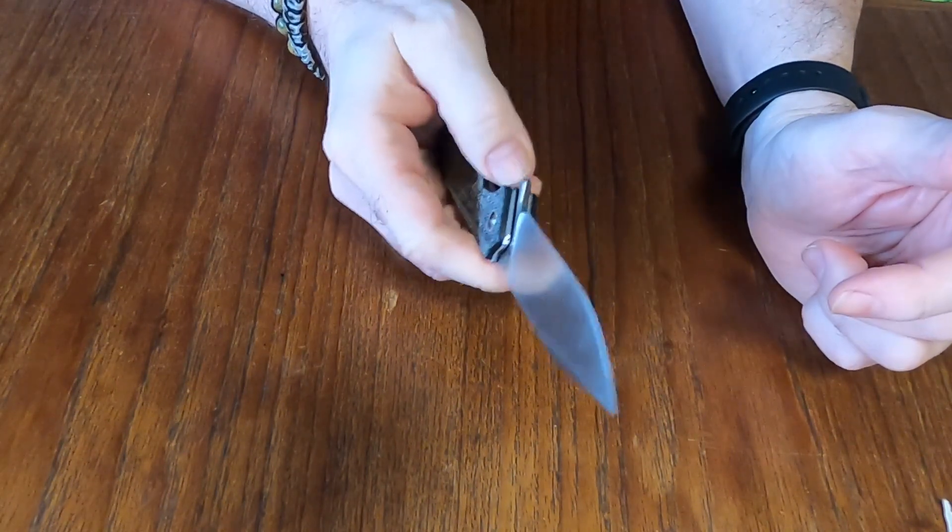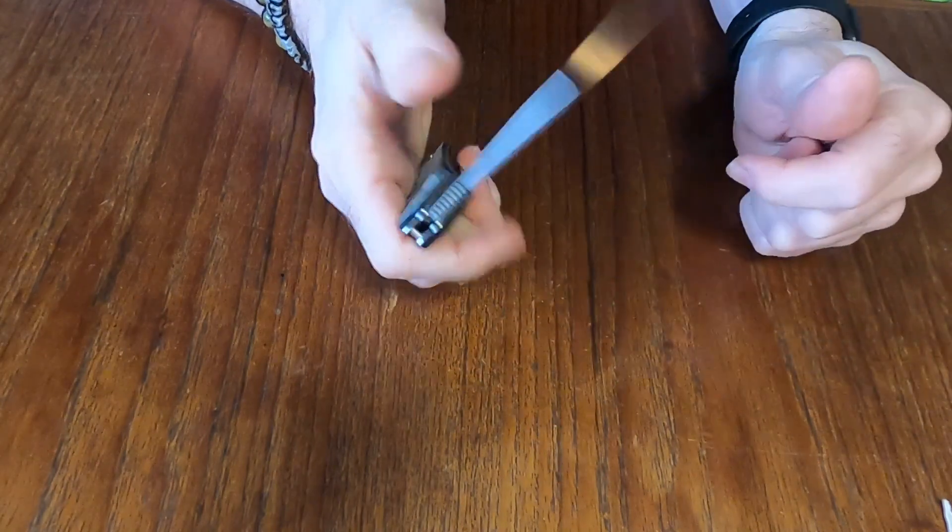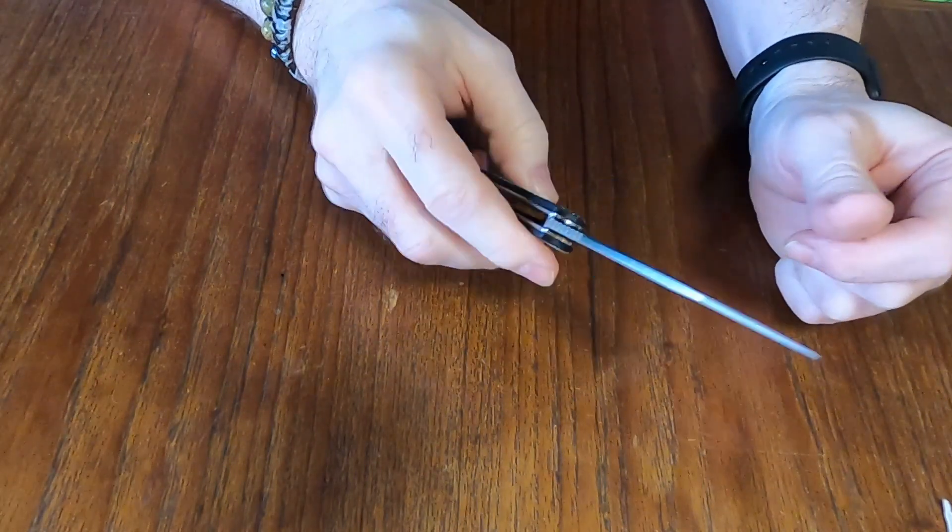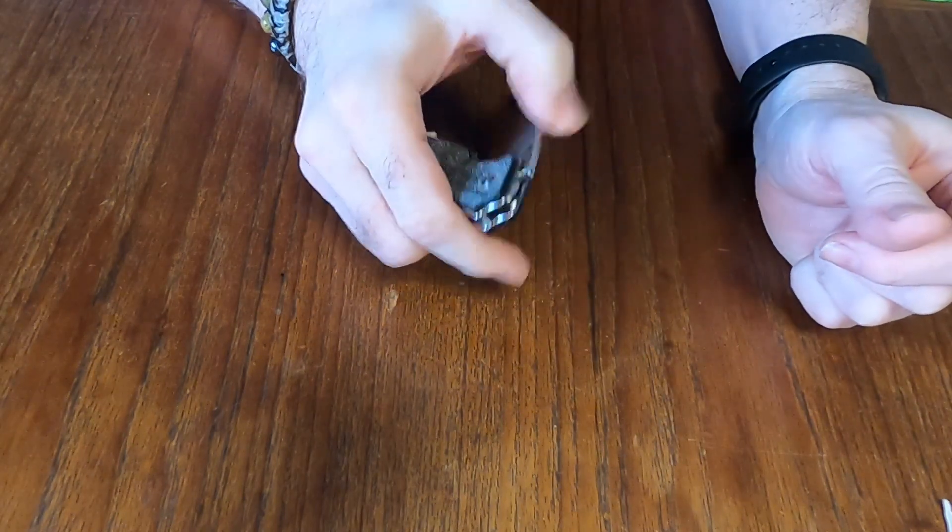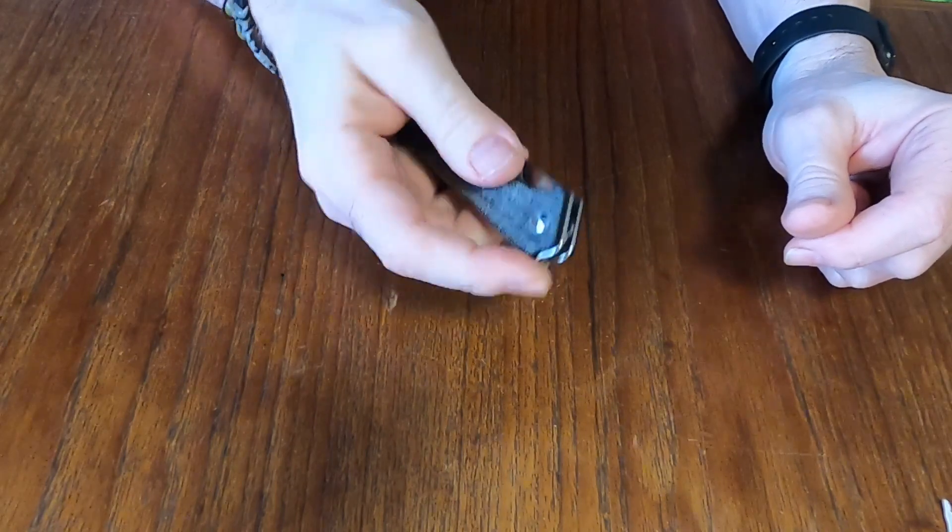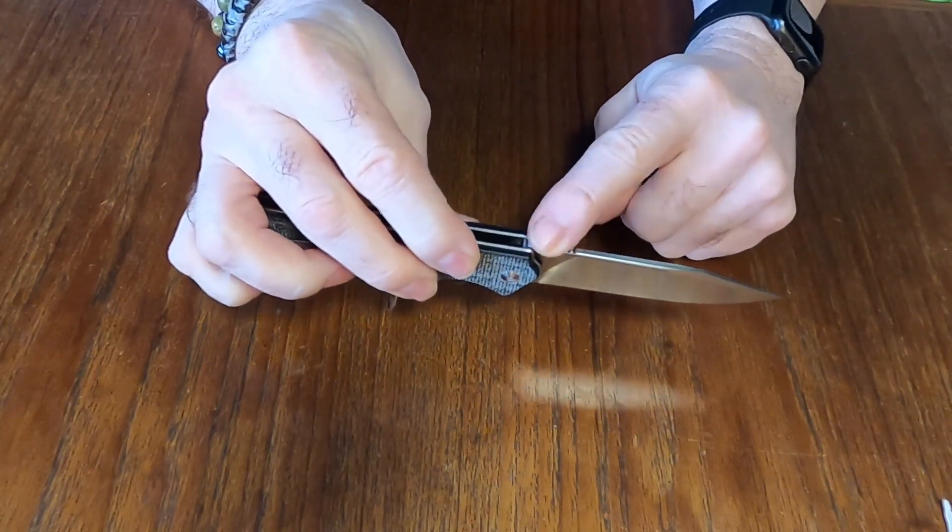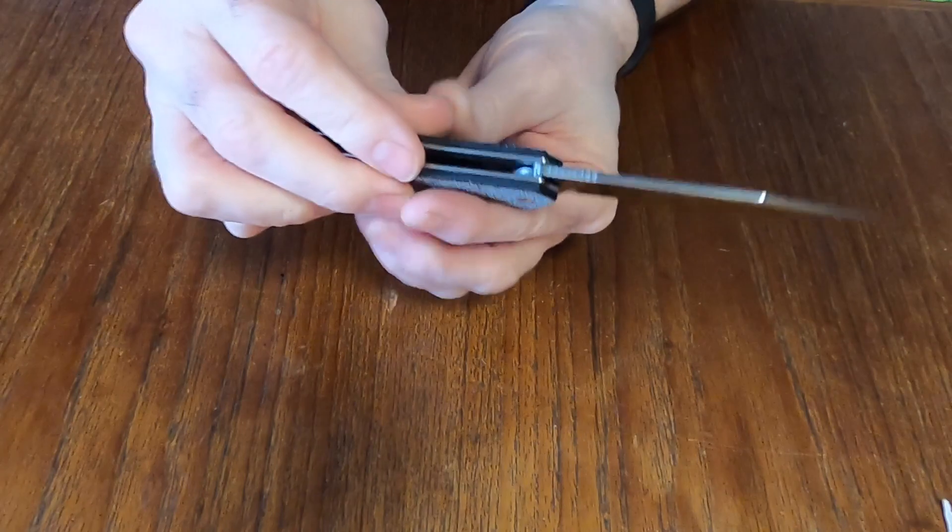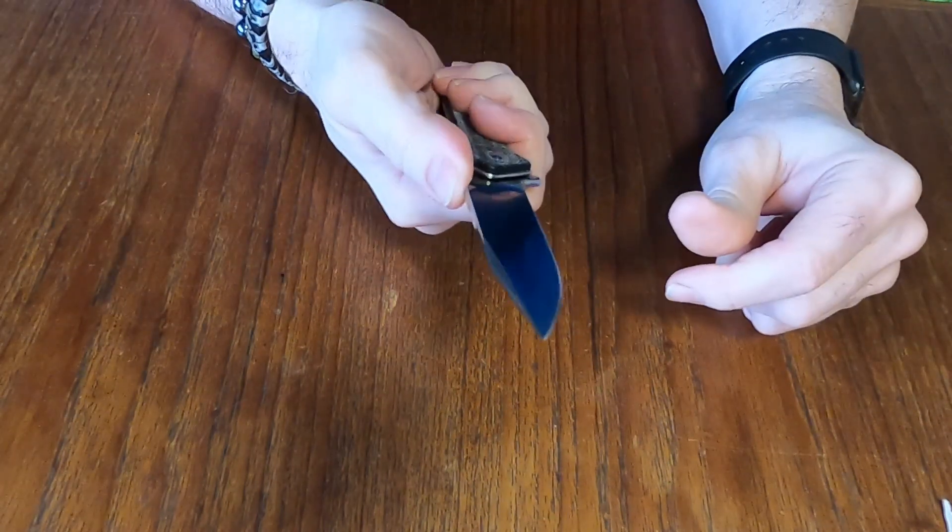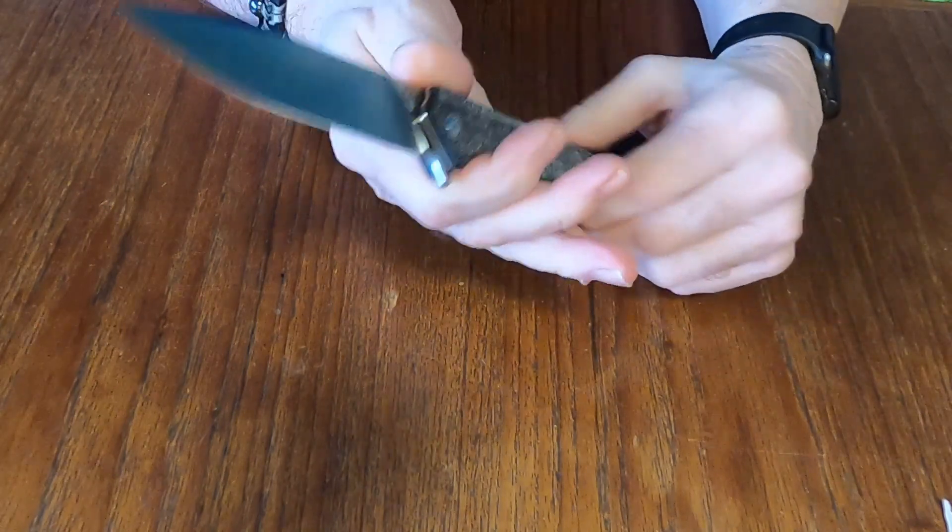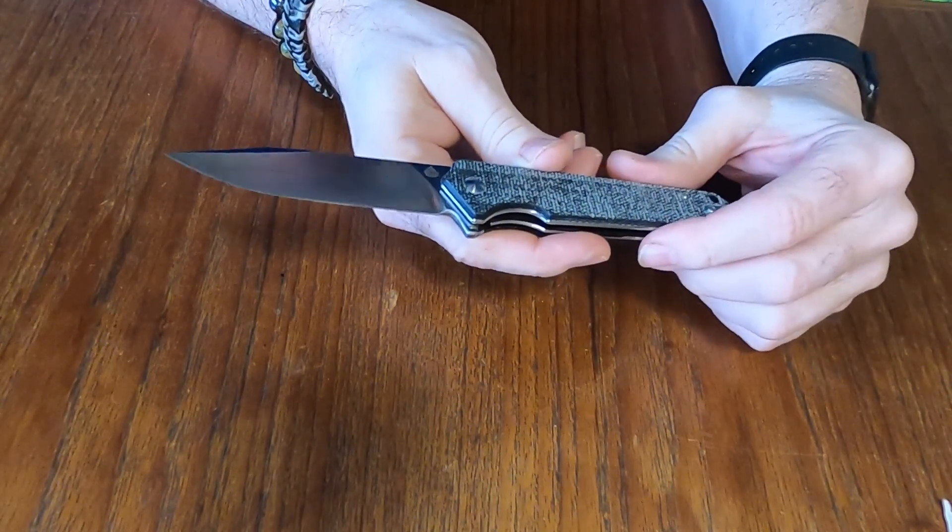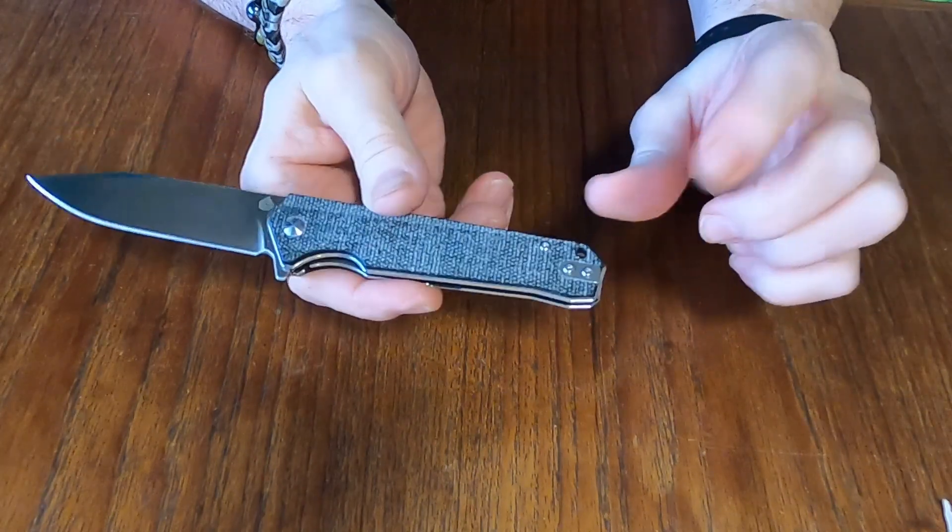It is flipper tab opening as you can see and it does have jimping on the back of the blade which is a plus for me. I appreciate the jimping. No choil on this, just basically a sharpening.